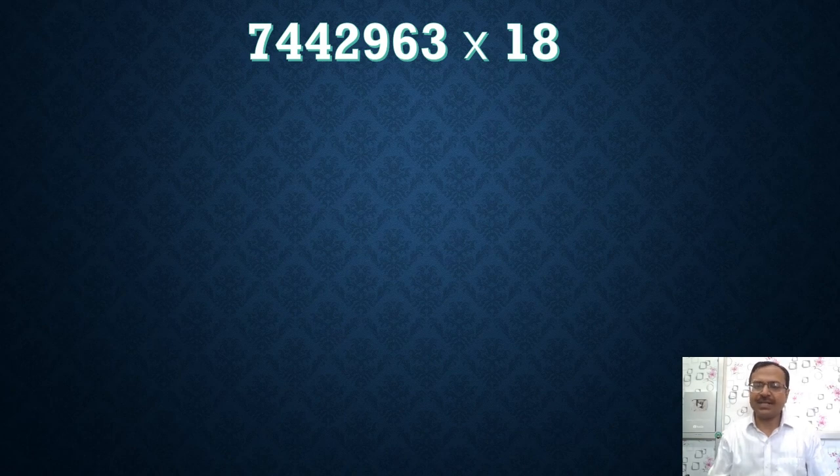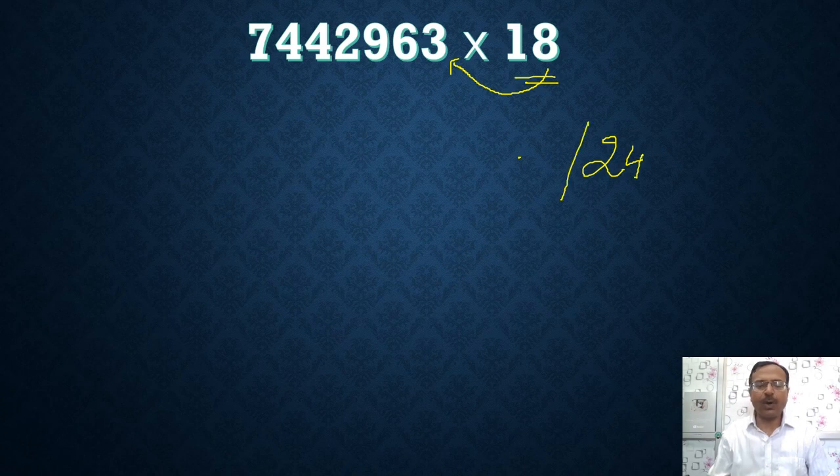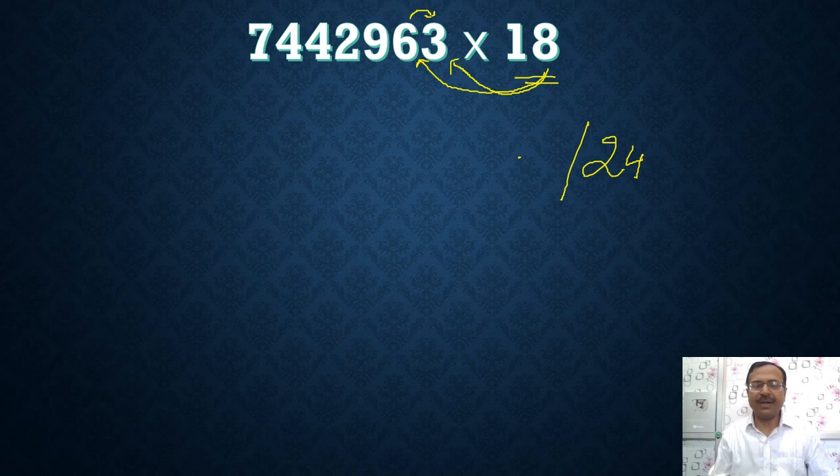7442963 times 18. So I don't know the 18 times table and I just know the 8 times table. So I know that when I multiply this 8 by 3, I'll get 24. So I'll keep on writing the products here. Now there's a small catch which you all have to be careful about. 8 times 6 is 48. And when you approach the second digit from the right, 8 times 6 is 48, you have to add the next digit also. And that's really, really important.